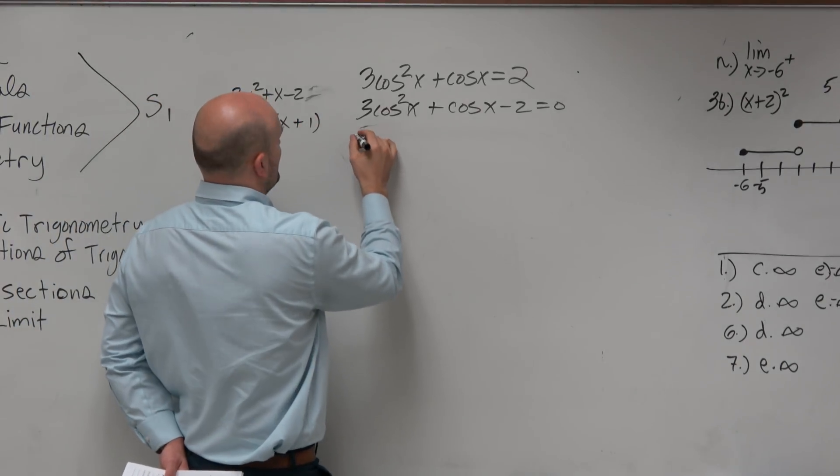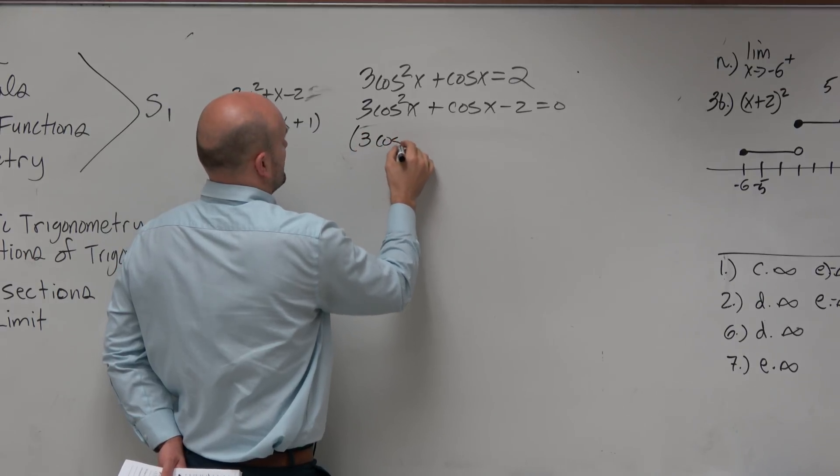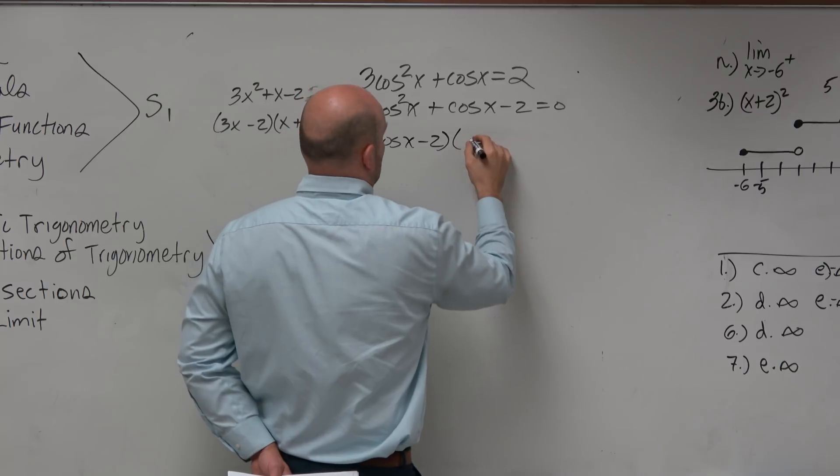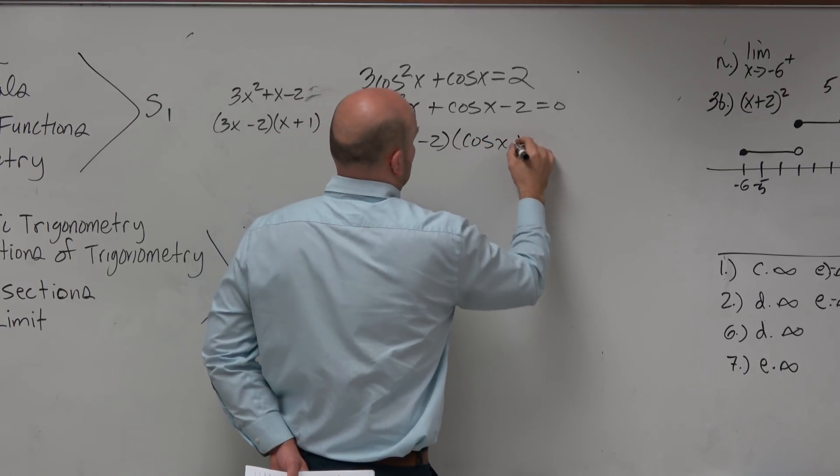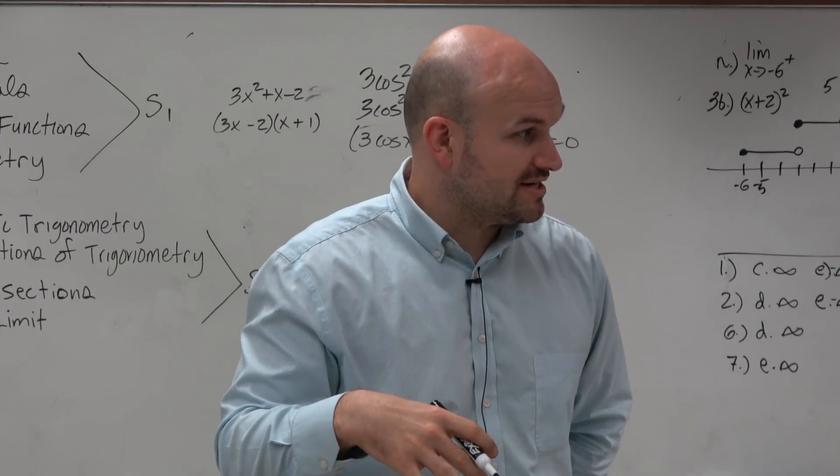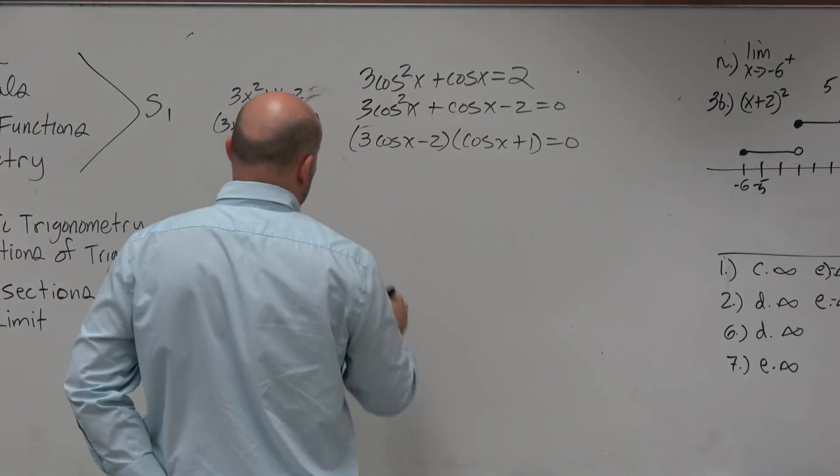Factored? So we basically factored form is 3 cosine of x minus 2 times cosine of x plus 1 equals 0. Now that I've factored a trigonometric equation, I can apply the zero product property.